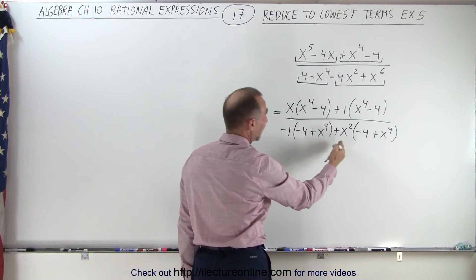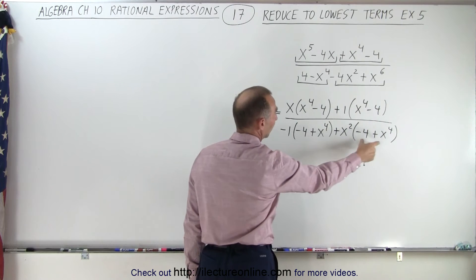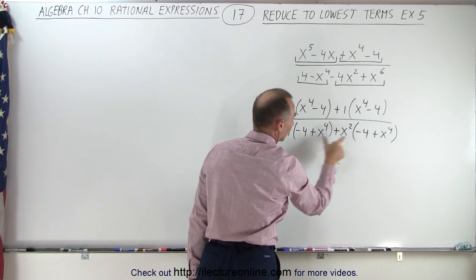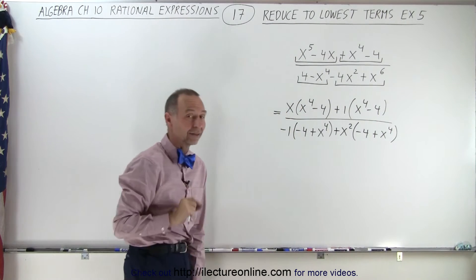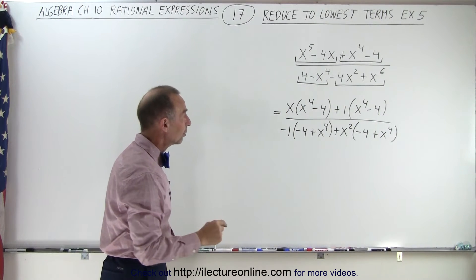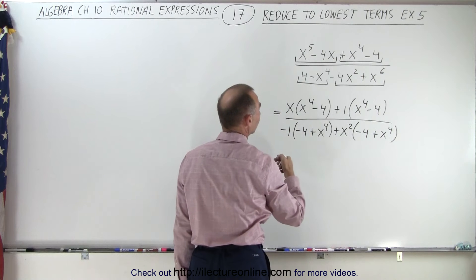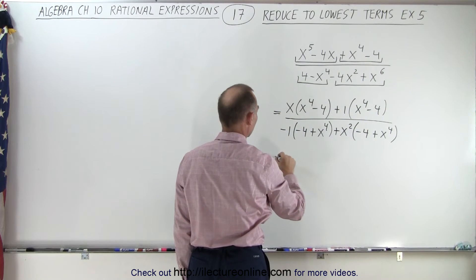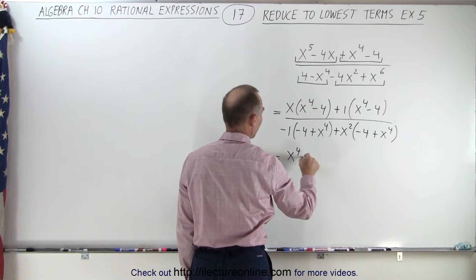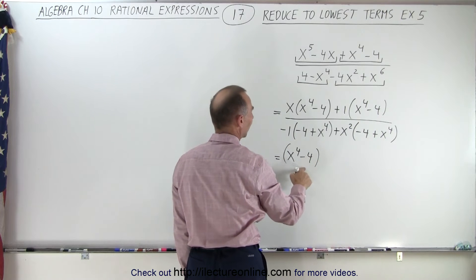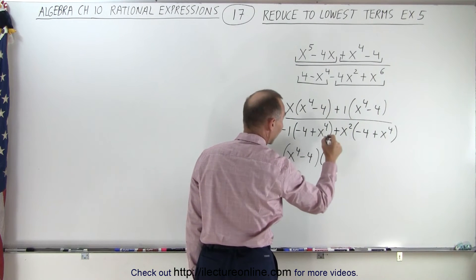So at first, I thought I should factor out a negative x squared, but that didn't work because I want these two factors to look exactly the same. So next, I'm going to factor out x to the fourth minus four out of the numerator. So this becomes x to the fourth minus four, and what I have left is x plus one.